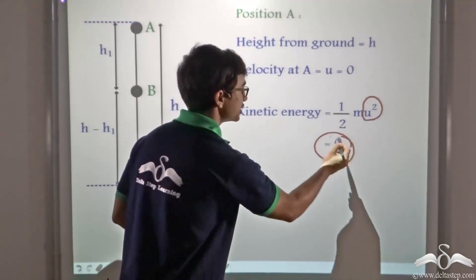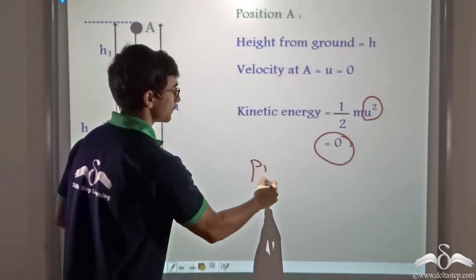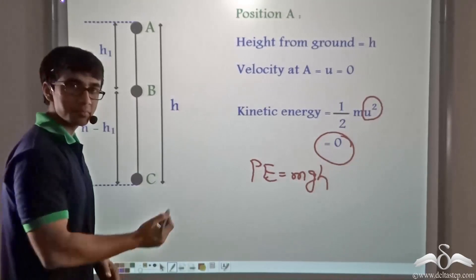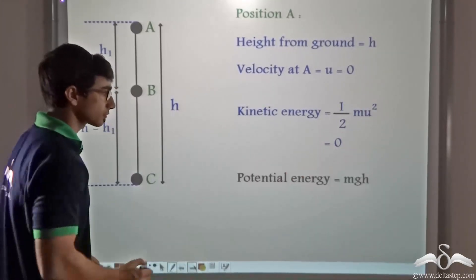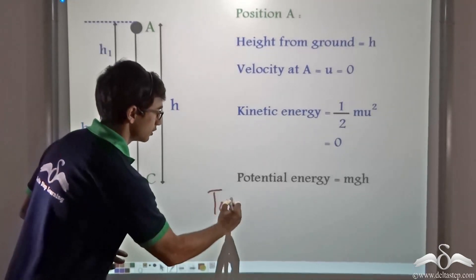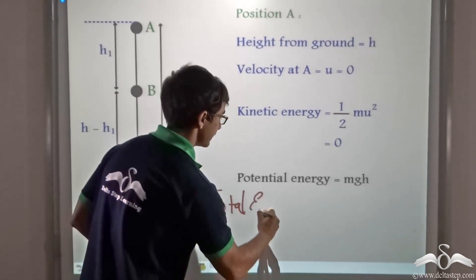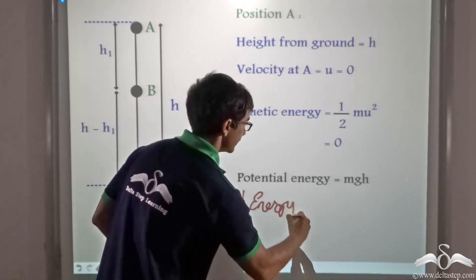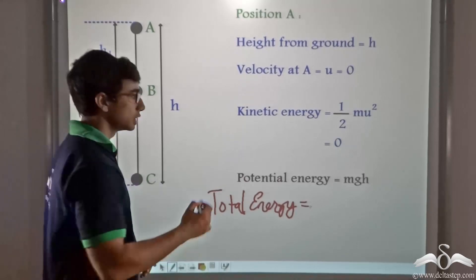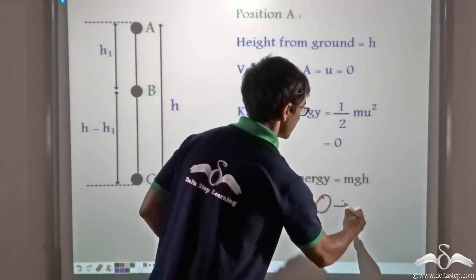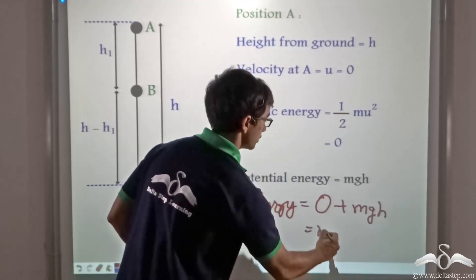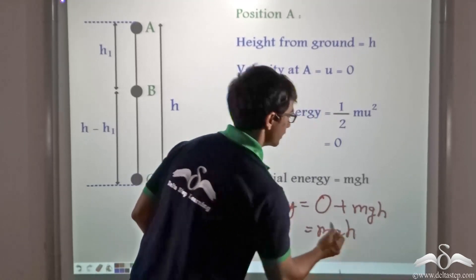Thus we can say that the total energy — the total energy is nothing but the sum total of the kinetic energy and the potential energy — which is zero plus M × G × H, which gives us MGH.